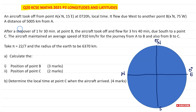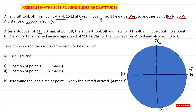First we need to read the question and underline all the important points. An aircraft took off from point A at x degrees north, 15 degrees east at 0720 hours local time. It flew due west to point B at x degrees north, 75 degrees west — a distance of 5005 kilometers from A. After a stopover of one hour 30 minutes at B, the aircraft flew for three hours 40 minutes due south to point C. The aircraft maintained an average speed of 910 kilometers per hour for both journeys.